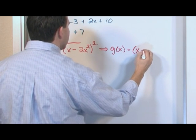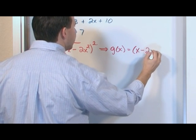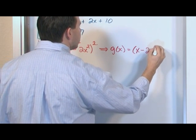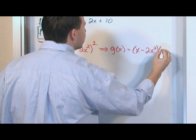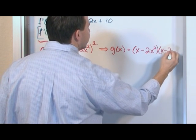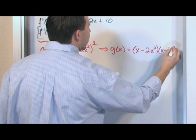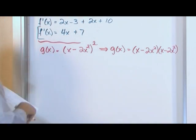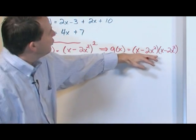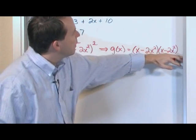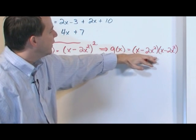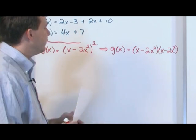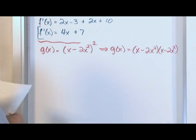My advice is for you to rewrite this as the following — I think you can see where I'm probably going to go with this: x minus 2x squared, times x minus 2x squared. This is just what the original expression is equal to. So write it this way. Now you have two functions of x multiplied by one another, and you can use the product rule of differentiation.